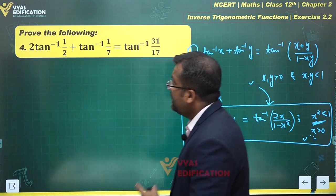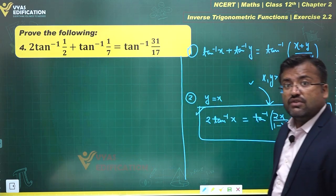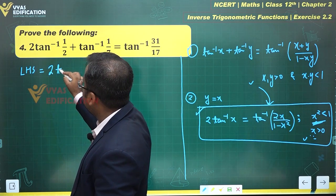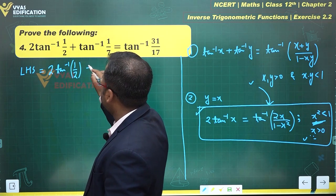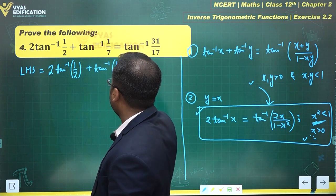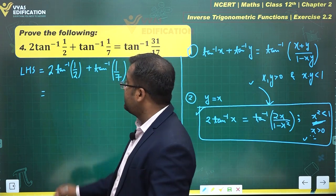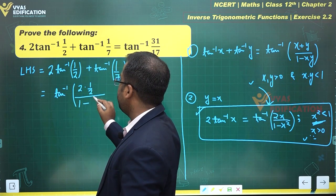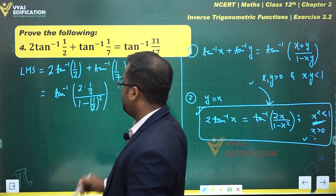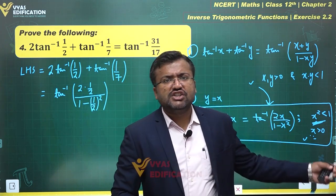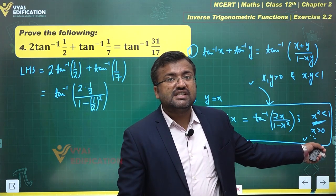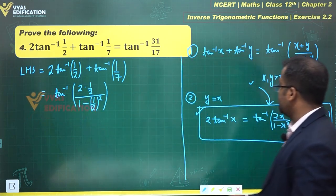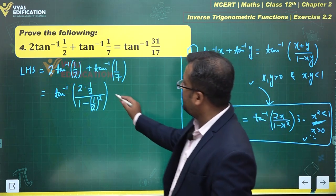Let's begin the question. We have 2 tan inverse (1/2) plus tan inverse (1/7) on the LHS. This 2 tan inverse (1/2) can be written as tan inverse of 2 times (1/2) over 1 minus (1/2) squared, using the formula tan inverse(2x/(1-x²)). Since 1/2 is greater than 0 and (1/2)² equals 1/4 which is less than 1, this result holds and we can apply it.